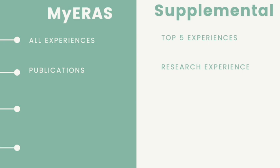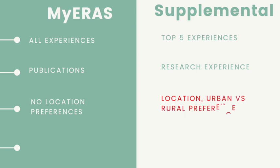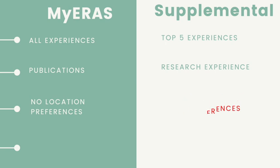For the interesting differences: in My ERAS you cannot have any location preferences listed — for example, you can't say you'd like to match in Texas, California, or New York. But for the supplemental application, you do have an option to list preferences based on location. You can also list preferences for an urban program versus a rural program. However, there is one specialty that does not have this option, which I'll get into later. Another key difference is that for the supplemental application, you can have program preference signals.